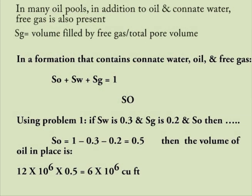In many oil pools, in addition to oil and connate water, free gas is also present. Gas saturation equals the volume of free gas divided by total pore volume. In a formation containing connate water, oil, and free gas: oil saturation plus water saturation plus gas saturation equals 1. Using problem one, if water saturation is 30 percent and gas saturation is 20 percent, then oil saturation equals 1 minus 30% minus 20% = 50%. The volume of oil in place would be 12×10⁶ times 50%, which equals 6×10⁶ cubic feet.